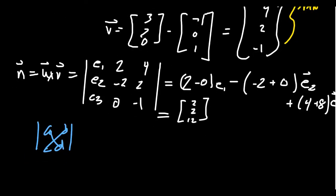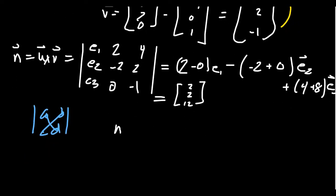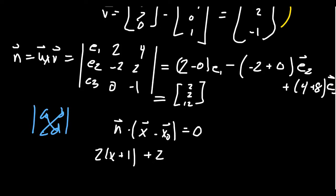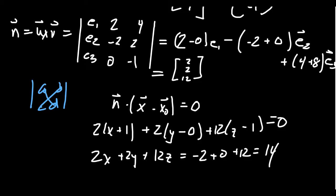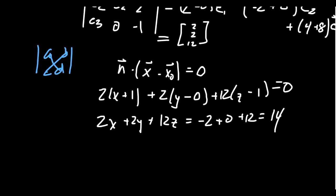This is our normal vector n = (2,2,12). Now we take n dot (x - x0) = 0, where x0 = (-1,0,1). That gives 2*(x+1) + 2*(y-0) + 12*(z-1) = 0. Distributing: 2x + 2y + 12z, and on the other side -2 + 0 + 12... moving constants over gives 2x + 2y + 12z = 10. Dividing everything by 2 gives x + y + 6z = 5.